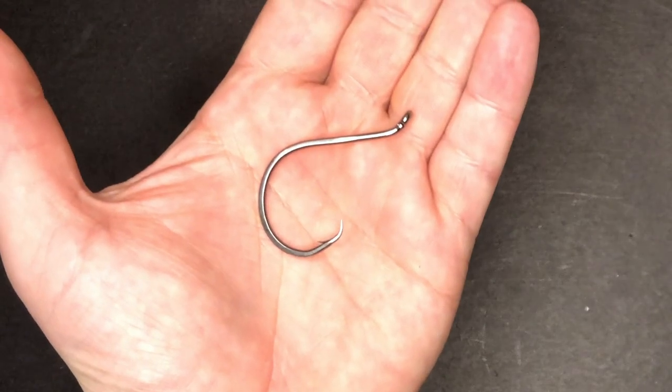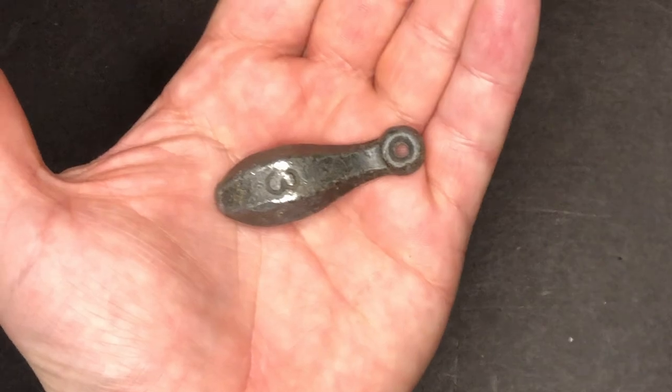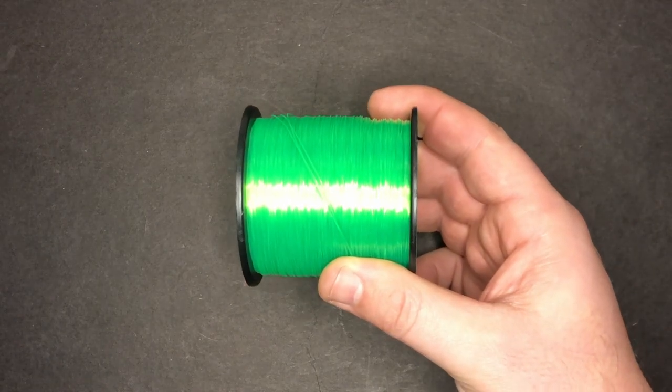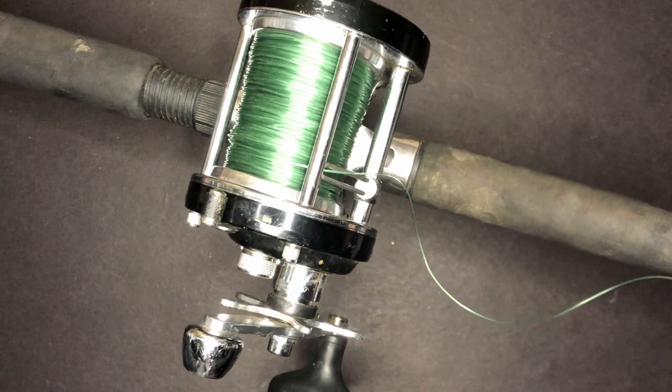For this demonstration, I'm going to be using two 8-aught circle hooks, a 3-ounce bank sinker, a barrel swivel, 30-pound fluorocarbon for the leader, and 65-pound fluorocarbon for the main line.